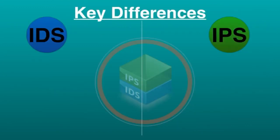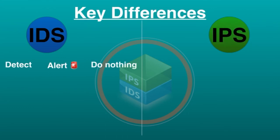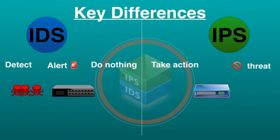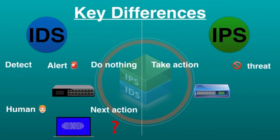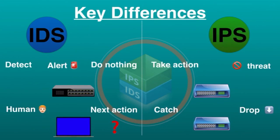The key differences: IDS is designed to detect a potential threat, create an alert, and do nothing to prevent the attack from occurring — this leaves a window for an attacker to cause damage to a target system. IPS, on the other hand, is designed to take action to block anything it believes to be a threat. IDS requires a person or another system to look at the results and determine what actions to take next, whereas the purpose of IPS is to catch dangerous packets and drop them before they reach their target.